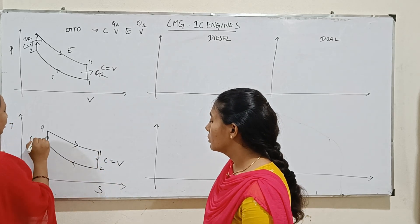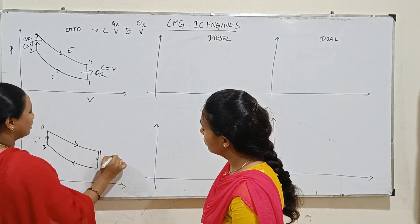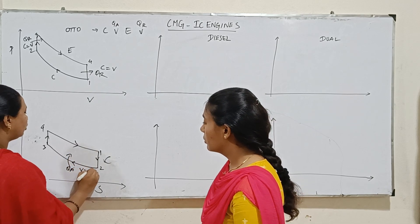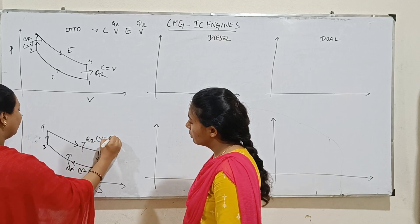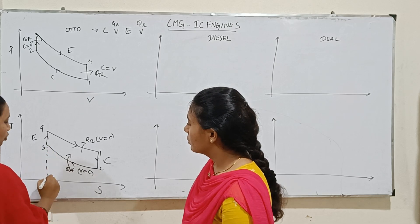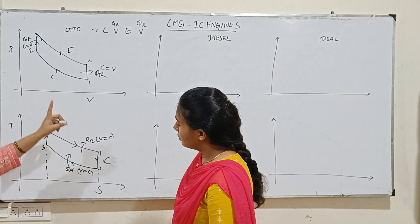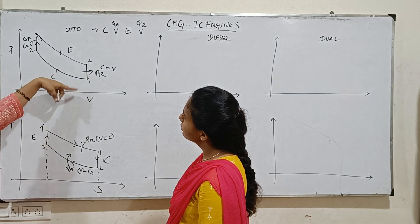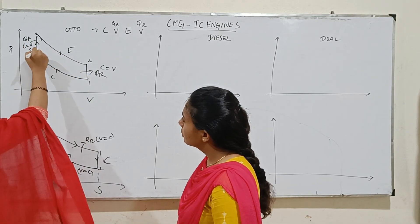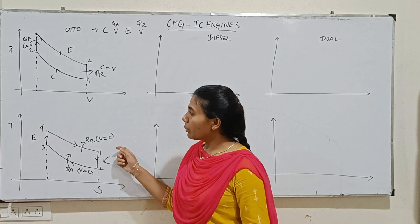This is the TS diagram. Constant volume heat rejection, isentropic compression, isentropic expansion. Heat addition and heat rejection both occur at constant volume, where volume is constant but pressure changes.